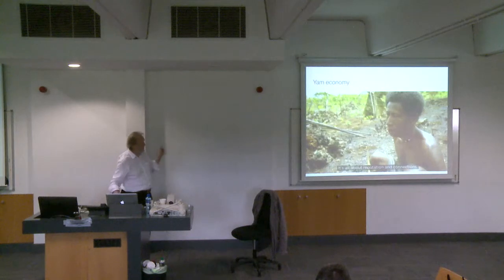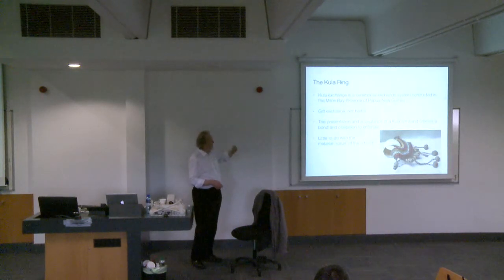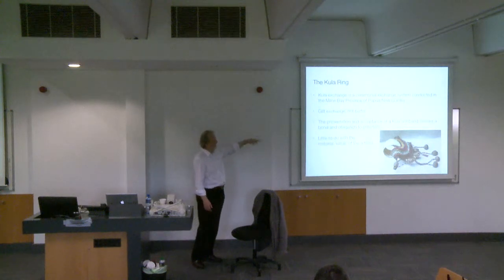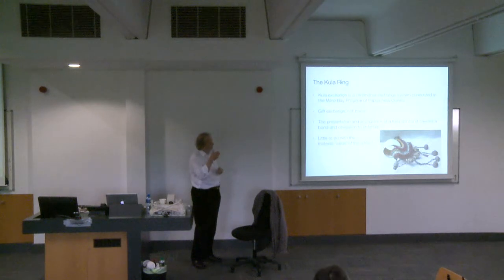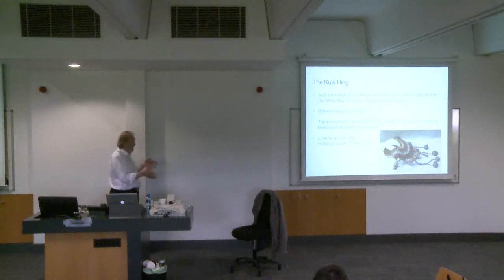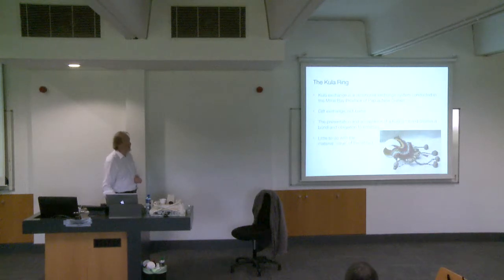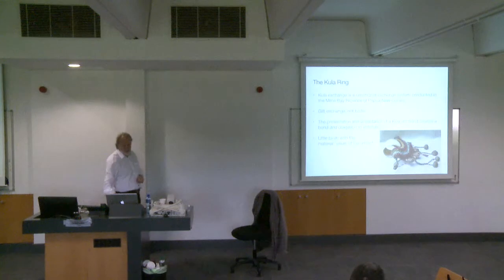The Kula Ring, or Kula Expedition, is a range of islands in the Milne Bay area. It's actually a gift-based economy. The actual value of the arm bands exchanged is minimal — a little bit of embroidery work in them. What they're exchanging them for is the right to do other kinds of trades. If somebody gives you one of these arm bands, you're taking on the responsibility of looking after them and their family if they visit the other island. It's little to do with the material value of the artifact — it's to do with creating an obligation. Malinowski wrote about the Kula Ring in his 1922 book Argonauts of the Western Pacific.